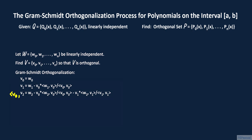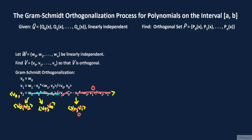We take the inner product of V sub 0 with V sub 2. The first term on the right side gives the inner product of V sub 0 and W sub 2. The second term produces a factor which is the inner product of V sub 0 with itself, which cancels out. The third term produces a factor which is the inner product of V sub 0 with V sub 1, and since V sub 0 and V sub 1 are orthogonal, the entire third term is zero. So all that remains is the inner product of V sub 0 with W sub 2 minus itself, giving zero. Therefore V sub 0 and V sub 2 are orthogonal.